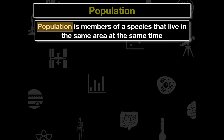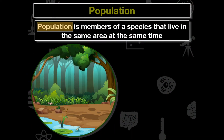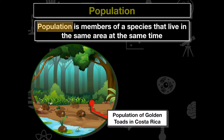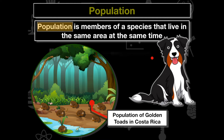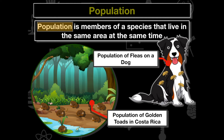Next is the population level — members of the same species living in the same area. A common example is the golden toads in Costa Rica, frequently studied in biology. The population includes just the frogs — not the trees, grasses, or lily pads — all individuals of the same species in the same area at the same time. Another example: fleas living on a dog are the same population, same species, capable of reproducing, all in the same area.